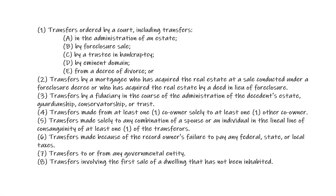If a mortgagee — remember, that's the bank — who acquired the property through a foreclosure and subsequently sells it, they are also exempt. Bank-owned homes are exempt from the seller's disclosure, whether they took it through a foreclosure or it was actually given to them as a deed in lieu. Both of those are exempt when the bank sells it.